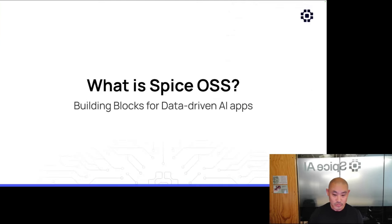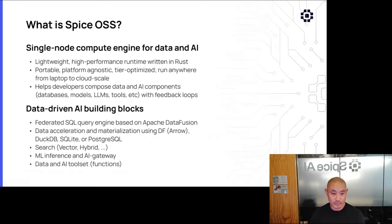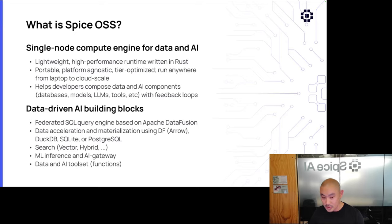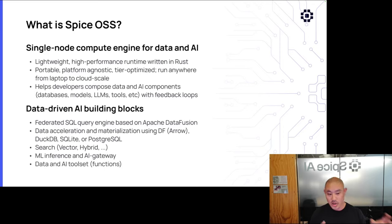We looked around and didn't see anything that specifically met our needs, especially around that tier-optimized solution where you could run it all the way to the edge. But now, a few years in, so much great work has been put into the community with building blocks like Arrow, DataFusion, and Iceberg that it's now feasible for a startup of less than ten people to actually build one — which is super cool. So what is Spice? Think of it as itself a set of building blocks — but instead of for databases, for data-driven applications. It's a single-node compute engine for data and AI, super lightweight, high performance, written in Rust, and you can run it anywhere from laptop all the way to cloud, across multiple tiers.